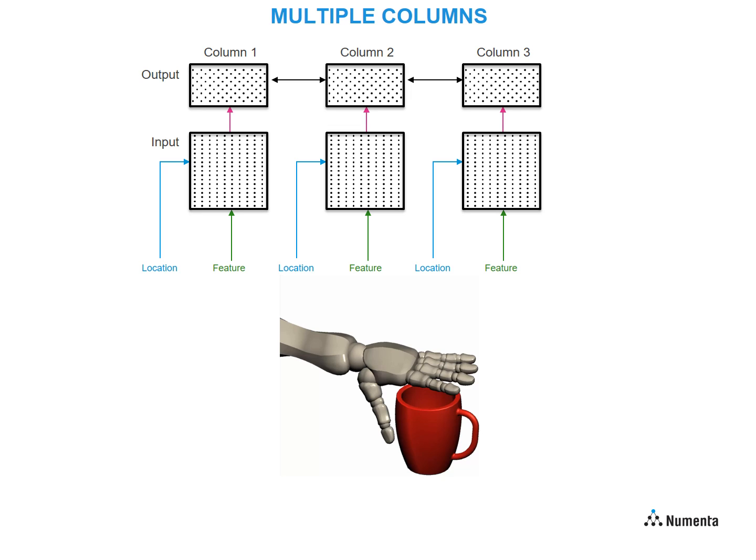Now let's look at what happens when multiple fingers and multiple cortical columns are involved, in this case three. With the first grasp, the thumb and first two fingers touch the cup. Each column receives a unique location signal and sensory input corresponding to each finger.